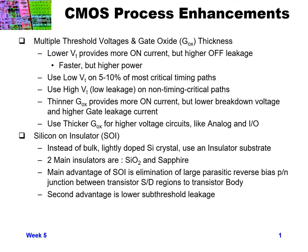Another process enhancement has been silicon on insulator (SOI) technology. Instead of using a bulk lightly doped silicon crystal as our substrate, we use a substrate that is basically an insulator. The two main insulators for silicon processing are silicon dioxide and sapphire. The main advantage of SOI is you eliminate a lot of your large parasitic reverse-bias PN junction between your source/drain regions and the transistor body. A second advantage is you actually get a lower sub-threshold leakage in your transistors.